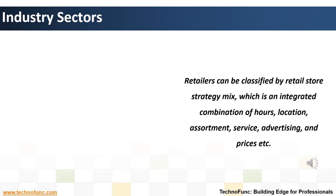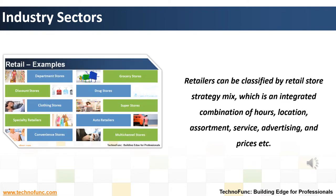Retailers can be classified by retail store strategy mix, which is an integrated combination of hours, location, assortment, service, advertising, and prices. In general, stores can be divided into two major groups: specialty stores and general merchandise stores. Specialty stores carry just one category of merchandise or several types of closely related merchandise. On the basis of retail store strategy mix, retail establishments are typically classified into nine types: department stores, discount stores, clothing stores, specialty retailers, convenience stores, grocery stores, drug stores, auto retailers, and multi-channel stores.